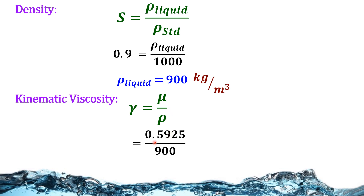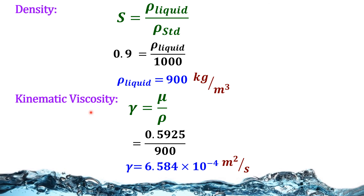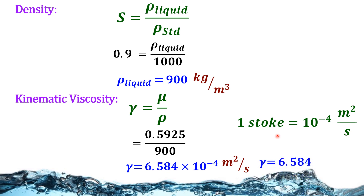Substituting mu = 0.5925 divided by 900, we get kinematic viscosity = 6.584 × 10⁻⁴ m²/s. To convert to stokes, we know 1 stoke = 10⁻⁴ m²/s. Therefore kinematic viscosity = 6.584 stokes.